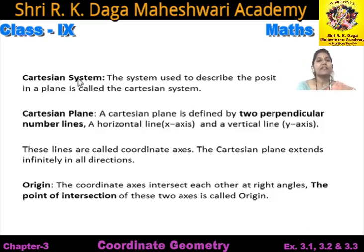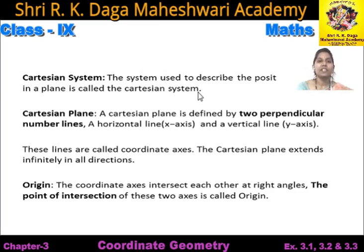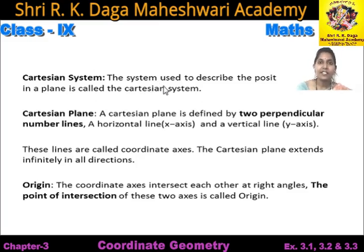First term is Cartesian system. The system used to describe the position of a point in a plane is called the Cartesian system. Kis point ko ham plane me jab represent karte hain, to woh kis tarah se karte hain? Is ke liye jis system ka ham use karte hain, woh kehata hai Cartesian system.